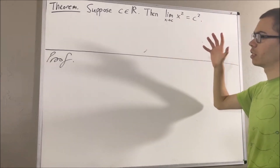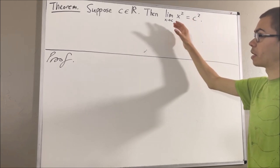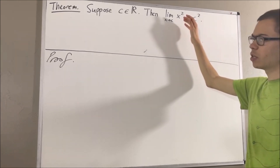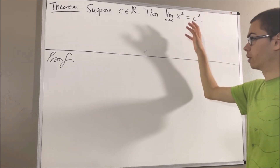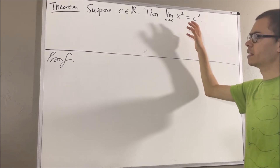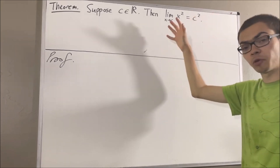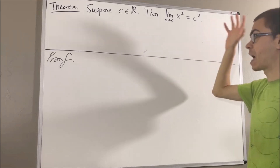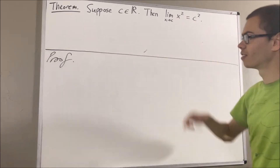We're trying to determine the limit of a function. The function we're working with is the function f from the set of real numbers to the set of real numbers defined by f of x equals x squared.